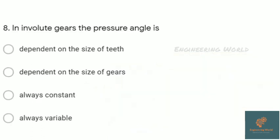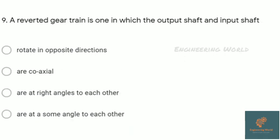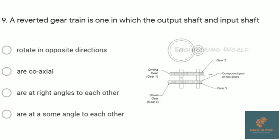Next question: in an involute gear, the pressure angle is always constant. Then the next question: a reverted gear train is one in which output shaft and input shaft are coaxial. This mechanism is used in watches. This is also an important question.